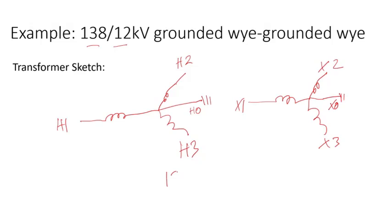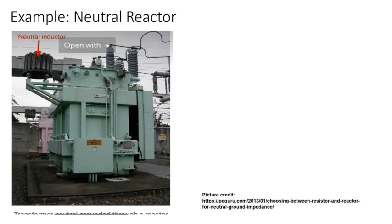The 138 kV side is the line-to-line voltage and 12 kV is the low side. Here's a picture from the internet showing a transformer with the neutral bushing grounded through a reactor or inductor. Some reactors might be mounted on the transformer, and others are standalone with a support that goes to a foundation, with the lead brought from the neutral.